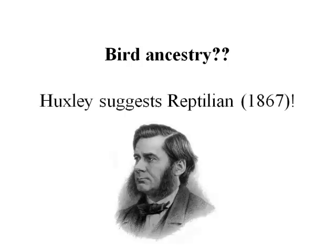In 1867, Huxley — the comparative anatomist who in 1860 debated Wilberforce and supported Darwin's theory — was the first to suggest a formal classification scheme that placed birds and reptiles in a single group, the Sauropsida. He in fact once called birds nothing but glorified reptiles.